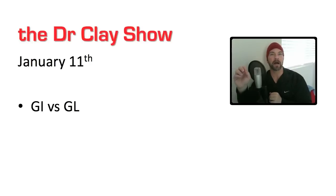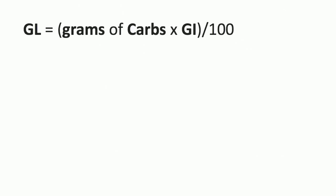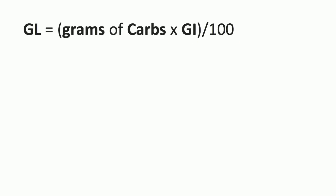Let me show you a couple of calculations and we'll wrap this topic up. Here's our formula for the glycemic load: glycemic load equals grams of carbs times the glycemic index, divided by 100. The grams of carbs refers to the portion that you're going to eat. That's your glycemic load.